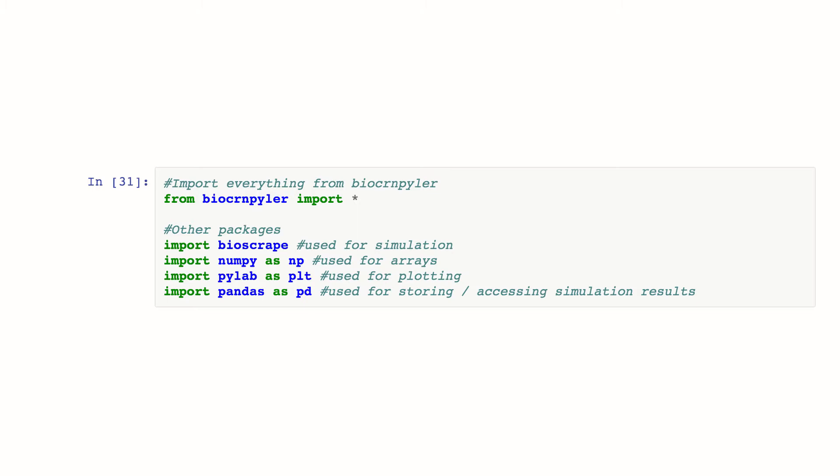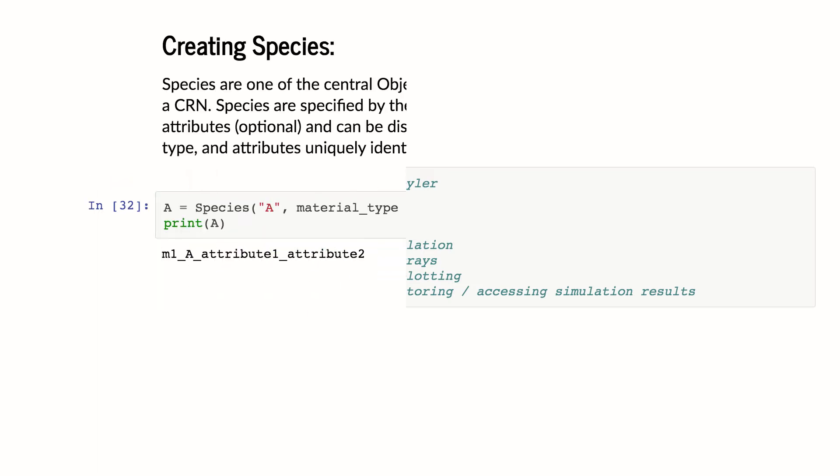We'll use Bioscrape for simulation. You won't actually ever use that directly, but it's important to make sure it's there. We'll use NumPy to produce arrays. PyLab, which is a stripped down version of Matplotlib for plotting. And Pandas will help us store and access simulation results. And all of these are in the prereq software. So if you've got things installed, you will have all of these.